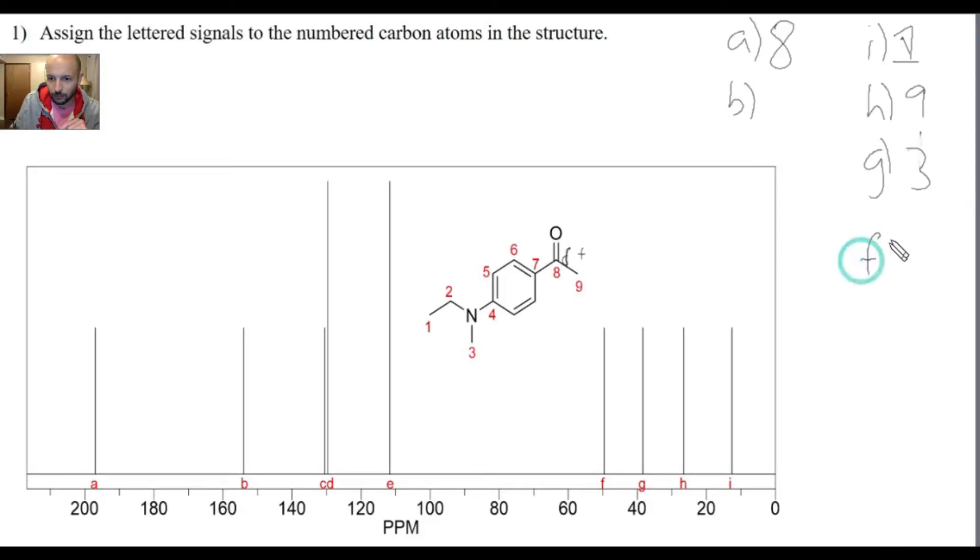And then peak F is the next one, and that one is a little difficult. But if you look at it, between the rest of the carbons, actually all of them are on the benzene. We've assigned 1, 3, and 9. There's still carbon 2, which is a CH2, but the rest of the carbons, 4, 5, 6, and 7, are on the benzene, and they don't have any CH2s. Because carbon 2 is the only CH2, that will be assigned to peak F.